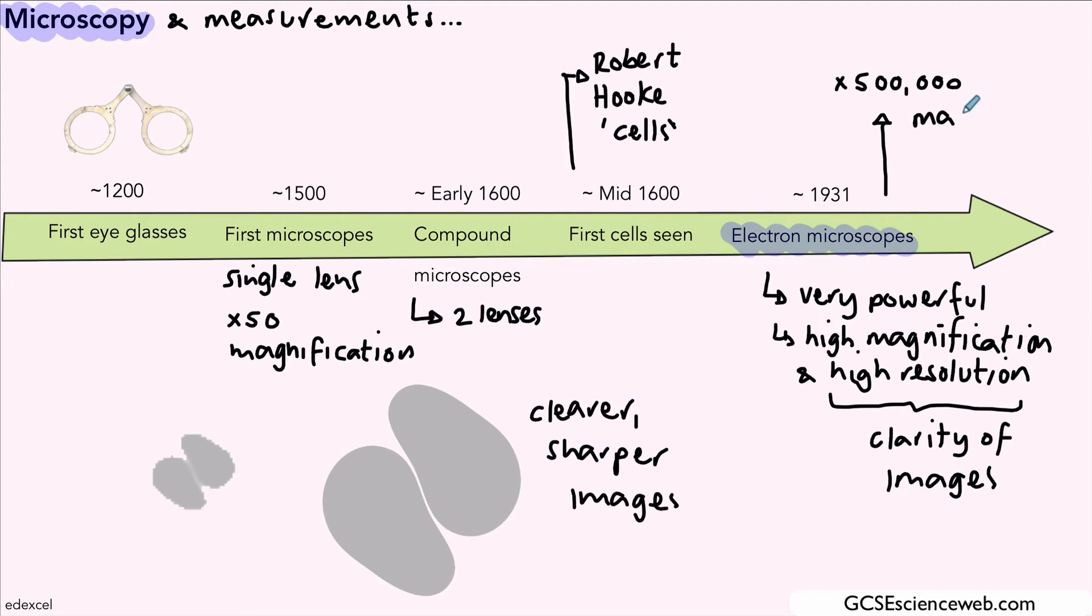Electron microscopes can magnify up to about 500,000 times, whereas your light microscope, the kind of microscope you have in school, that's only probably around about 1,500 times magnification. So that's just an overview of the development of microscopes.